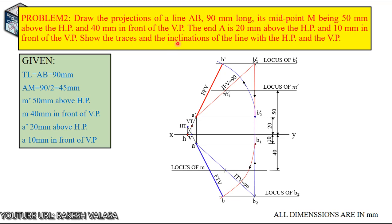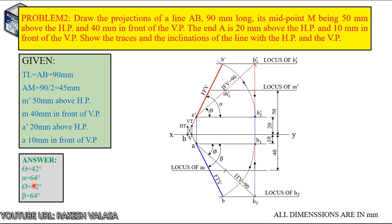He also asked to measure the inclination of the line with HP and VP. Take your protractor or mini-drafter. Measure the initial front view — A dash to B2 dash — with the XY line. That angle is theta, the inclination with HP. Similarly, the initial top view makes an angle with the XY line — that is phi, the inclination with VP. Also measure the apparent angle alpha: the final front view makes angle with XY, that is apparent angle alpha. Similarly, the final top view makes angle with XY line — that is beta. The answers are: theta equal to 42 degrees, alpha equal to 64 degrees, phi equal to 42 degrees, and beta equal to 64 degrees.